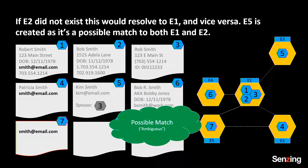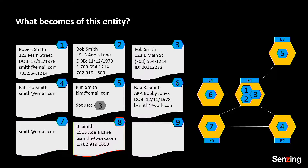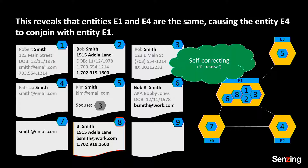We have a famous boxer, George Foreman. He named all five of his boys George. That's this problem. When record eight shows up, it's quite a bit like entity E1. It's going to land inside of E1, and then something else is going to happen. If you learned that entity E1 had the email address bsmith at work, the moment eight lands in E1, you can change your mind about the past and pull in record six.